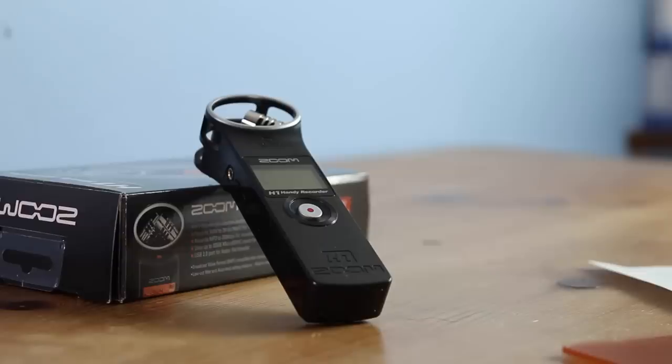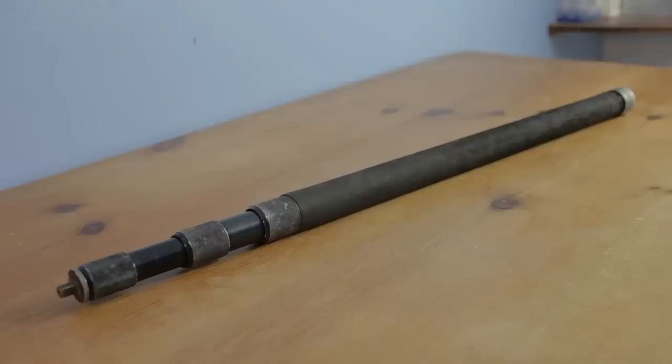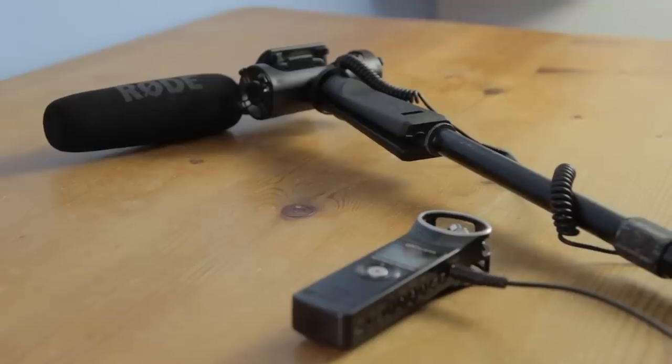So you're going to need a Zoom H1. You can plug your Rode VideoMic into this recorder using a cable, the Rode VC1 and then you'll also need a boom pole in order to get it close to the talent and finally you'll need a grip to attach the Rode VideoMic to the boom pole.